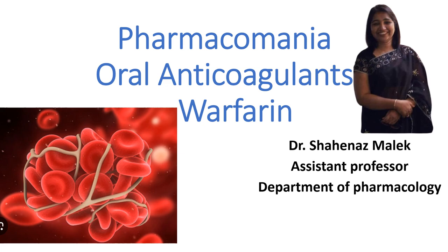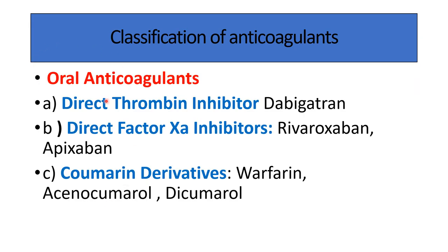Oral anticoagulants are used for maintenance therapy and they inhibit the deposition of fibrin in the blood vessel. Classification of oral anticoagulants: direct thrombin inhibitor is dabigatran; direct factor Xa inhibitors are rivaroxaban and apixaban — the suffix 'bane' indicates factor Xa inhibitors. Coumarine derivatives are warfarin, acenocoumarol, and dicoumarol.